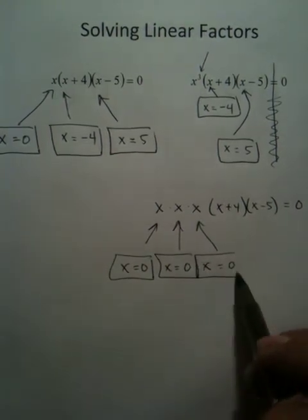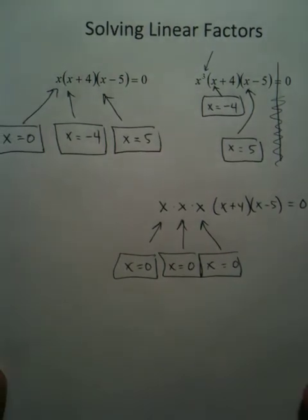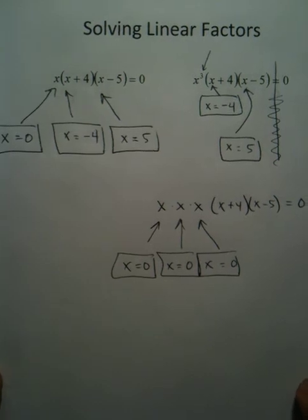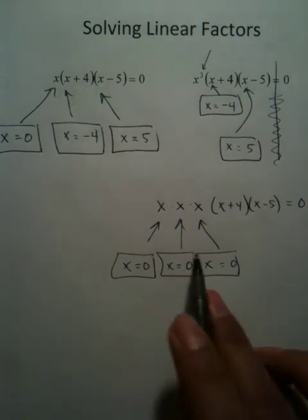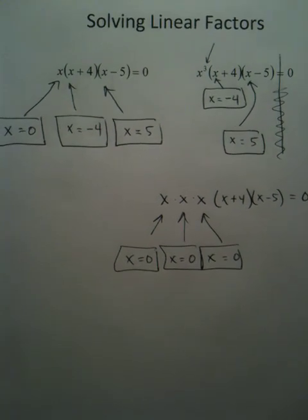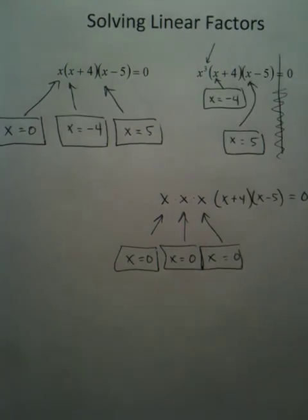Students ask: do I have to write all three zeros as my answer? This is what's called a multiplicity. It's not necessary to write all three, but you definitely have to state that this answer has a multiplicity of 3 because there are three zeros in it. So you can either write all the answers or state the proper vocabulary — it's your choice.